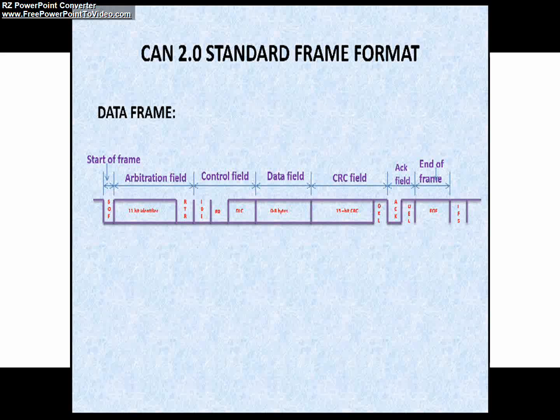First, we will see the structure of Standard Data Frame. The Standard Data Frame consists of 7 fields. As you can see in this picture, the 7 fields: